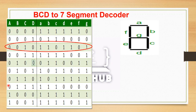Now looking at the truth table for the BCD to 7-segment decoder. For the input 0,0,0,0 (decimal 0), the segments A, B, C, D, E, F are all active (G is off) to display the digit 0. The segments that are active and inactive determine which digit is displayed on the 7-segment display.